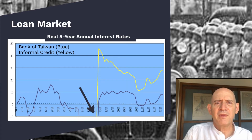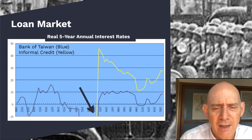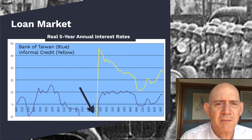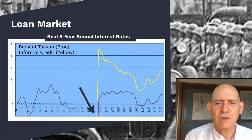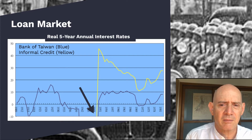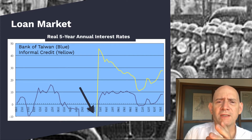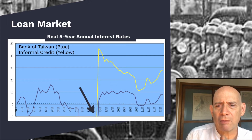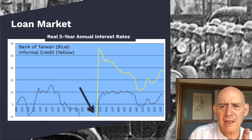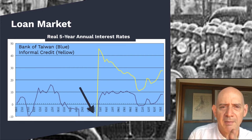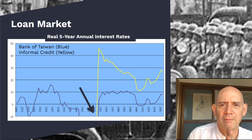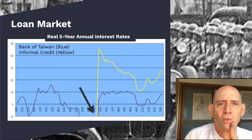This is the real five-year annual interest rate. I've taken two sources: one is the Bank of Taiwan, and the other is informal market credit, with the annual series starting in 1951. What you can see is that if this comes out at, say, 10%, that means if you were to put your money in the bank that year, after five years you would have earned 10% interest per year on average in real terms. That's important — not just the nominal interest rate, but accounting for inflation.